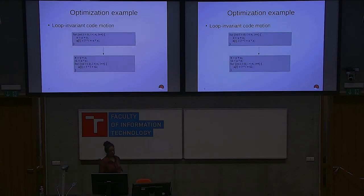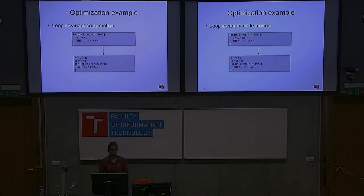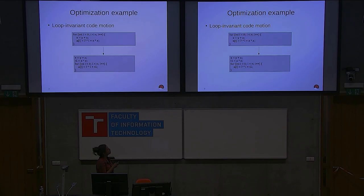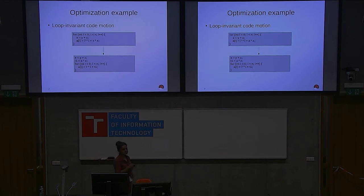Next is loop invariant code motion. In this example, inside a for loop we have x equal to y plus z, and the value of y plus z is not changing anywhere inside the loop. Additionally, x is not changing within the loop either. So whatever is not varying inside the loop, we can take it out so that computation happens only once rather than in every iteration. This only applies when the variables don't change.